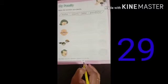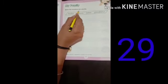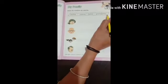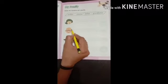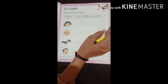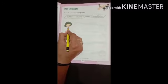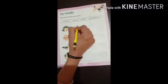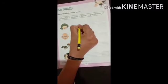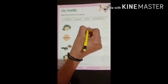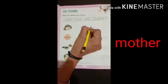Now next, page number 29. Name the members of family. Yeh sab family members ke naam hai. Aapko photo dekhni hai aur uske saamne family member ke naam likhne hai. Mother — yuh first picture mother ka hai, toh aapko yaha pe likhna hai: M-O-T-H-E-R. Mother.